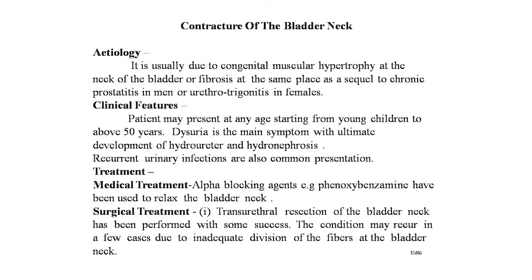When the etiology is congenital muscular hypertrophy, patients are usually young children. Dysuria is the main symptom, with ultimate development of hydroureter and hydronephrosis. Recurrent urinary infections are also a common presentation for this condition.